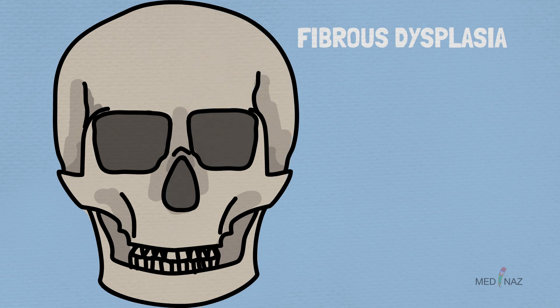First we will discuss about the location. Fibrous dysplasia involves the maxilla almost twice as often as the mandible. It is an important differentiating point.